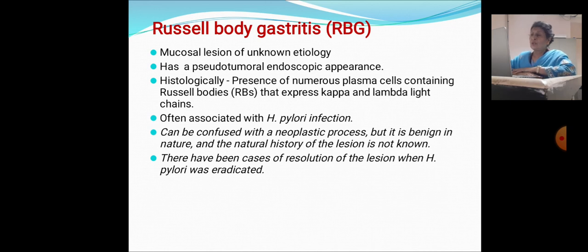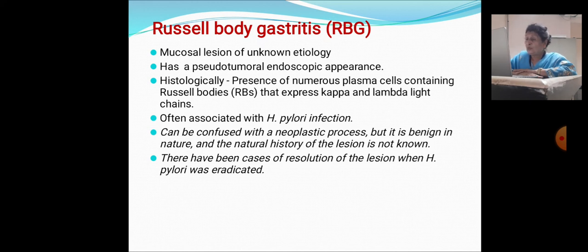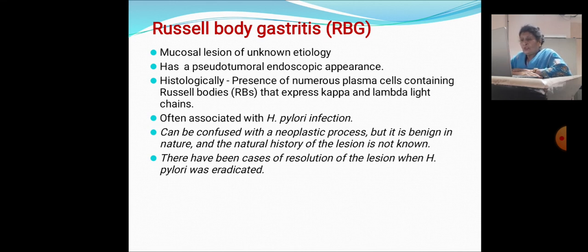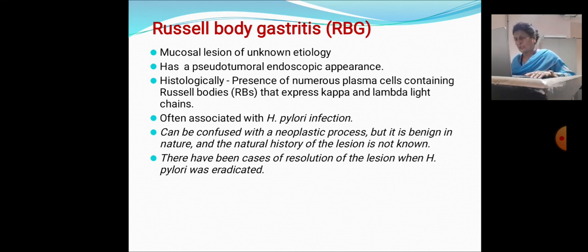Russell body gastritis is a mucosal lesion of unknown etiology. Histologically, it shows presence of numerous plasma cells containing Russell bodies that express kappa and lambda light chains, often associated with H. pylori infection. It can be confused with a neoplastic process but is benign in nature and its natural history is unknown. There have been cases of resolution of the lesion when H. pylori was eradicated, without any other medications needed.